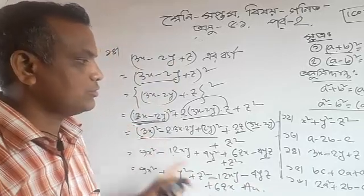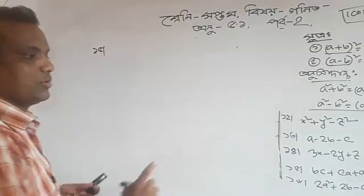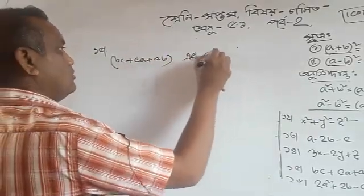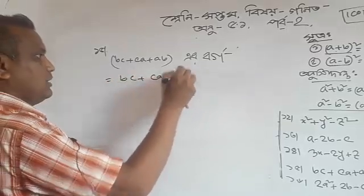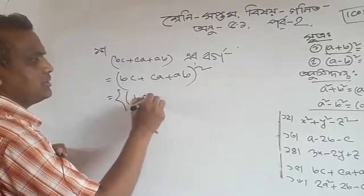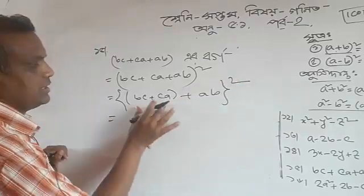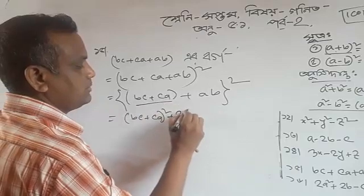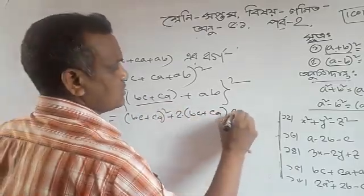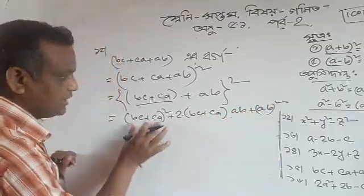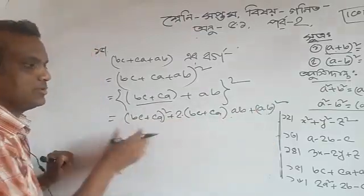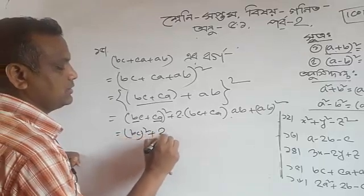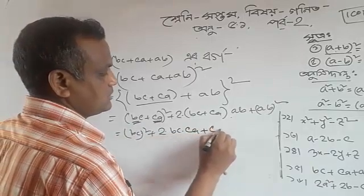OK, let's do this. We are going to do bc plus ca plus ab, a r bargo. So we are going to do bc plus ca plus ab. Now bc plus ca plus ab, and ab plus ba plus ba plus b square, so a square plus 2ab plus b square. You can see that a square plus 2ab plus b square.